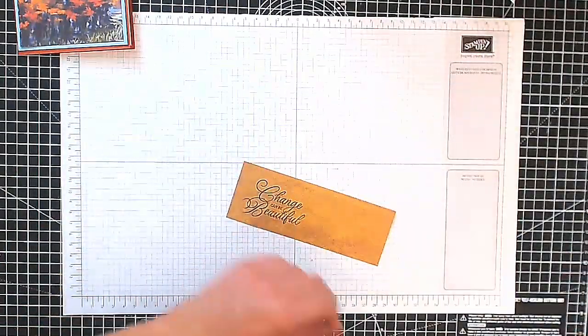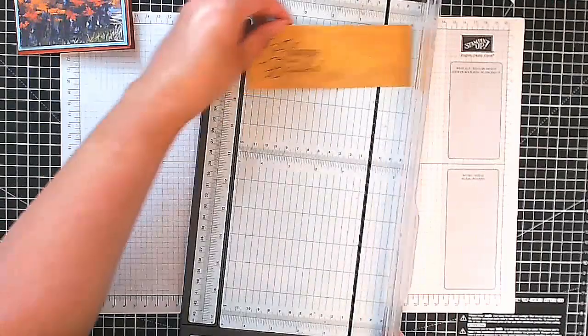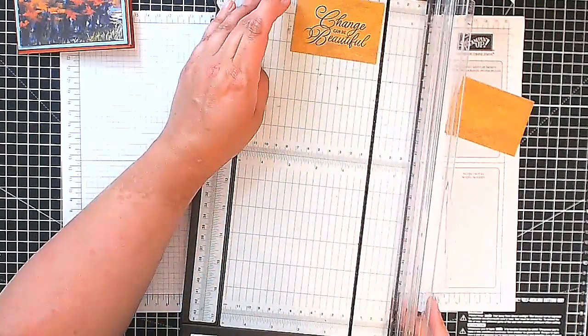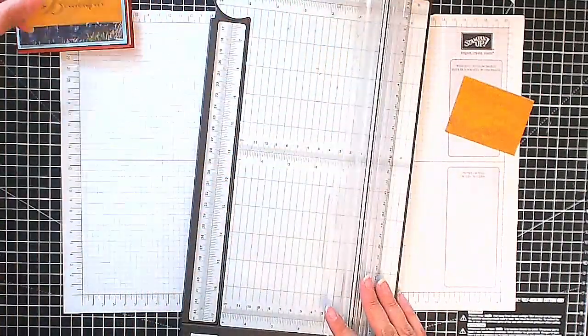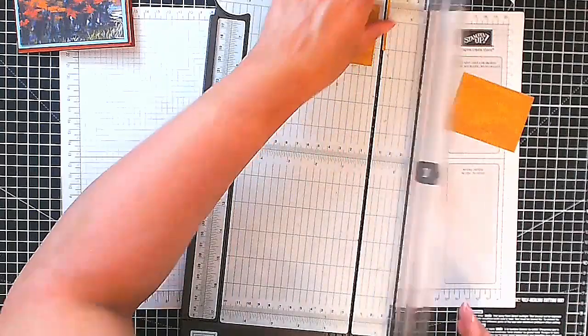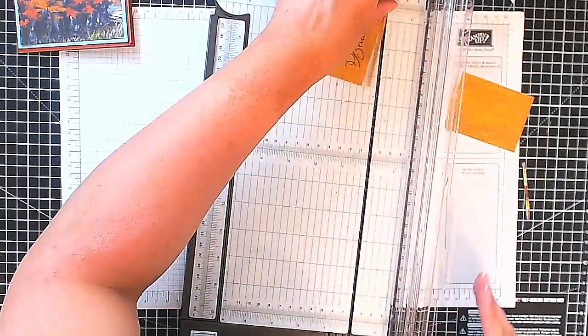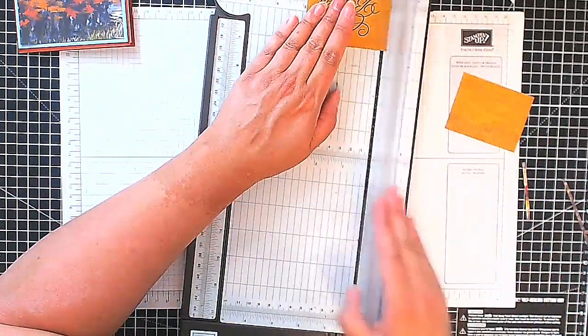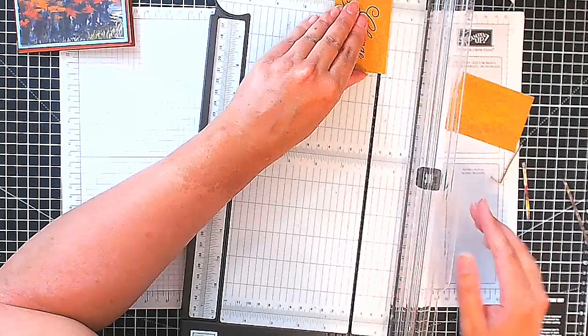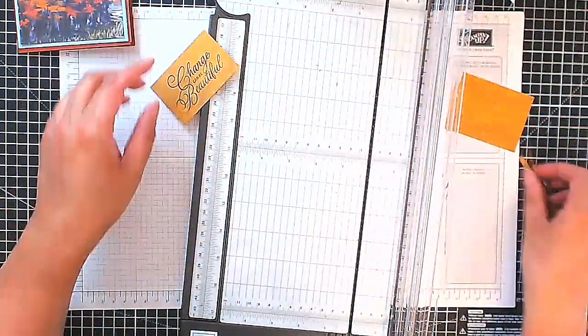Now I'm just going to trim my sentiment down using my trimmer. So let's just see how far we want. I just do this by eye. Yeah, that looks good enough for me. It's going to be fine. Well, maybe not. Let's just take a little bit more off I think. That way we can have a little border around it. That's okay.